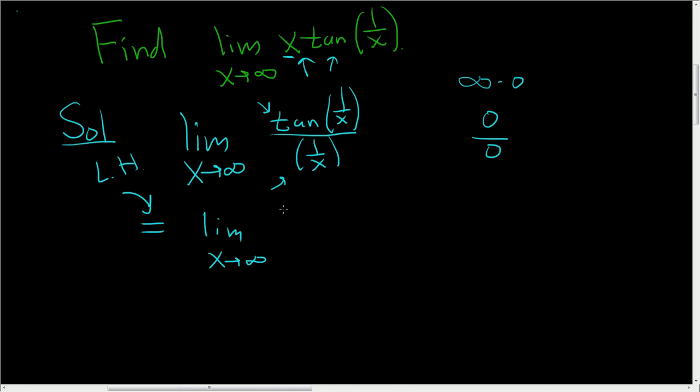The derivative of tangent is secant squared. So you get secant squared 1 over x. Now you have to use the chain rule. You have to multiply by the derivative of the inside piece. The derivative of 1 over x is negative 1 over x squared.